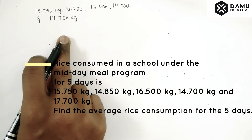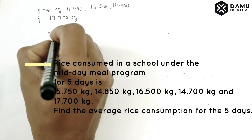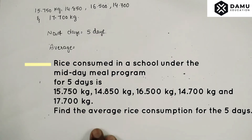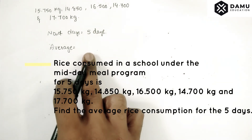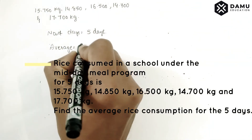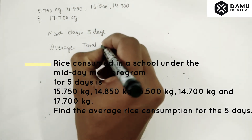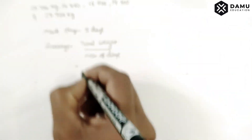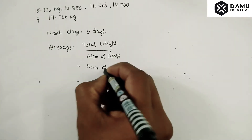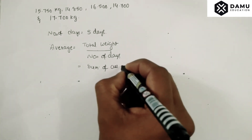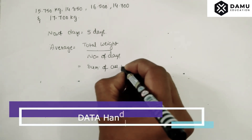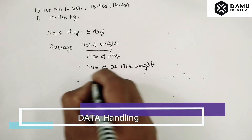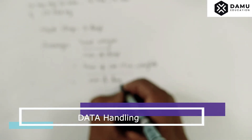We need to find the average rice consumed for the five days. The number of days is equal to five. The formula is: sum of all the rice weights for all days divided by the number of days, which gives us the total weight divided by number of days.